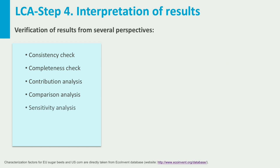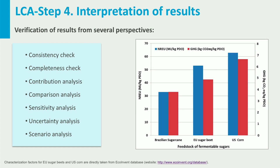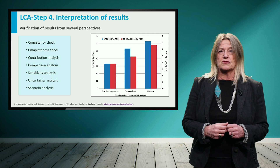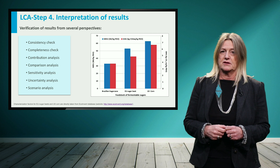Finally, sensitivity, uncertainty, and scenario analysis are useful to determine the influence of assumptions, methods, data, and any structural or statistical imprecision in LCA results. For example, what would be the LCA results if different allocation methods are used for the sugarcane industry products, or if different geographical locations and feedstocks are considered, as shown on the screen? Or if the analysis is performed for the timeframe 2020? Those are all typical questions often addressed in the interpretation of LCA results.